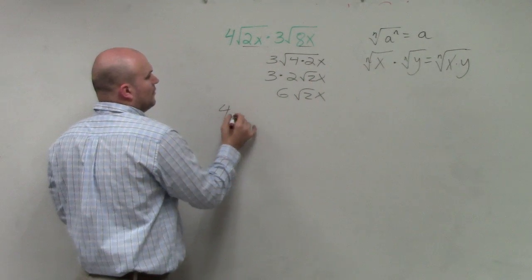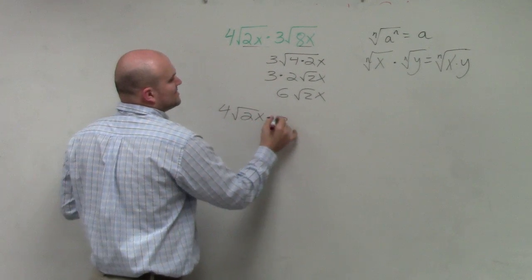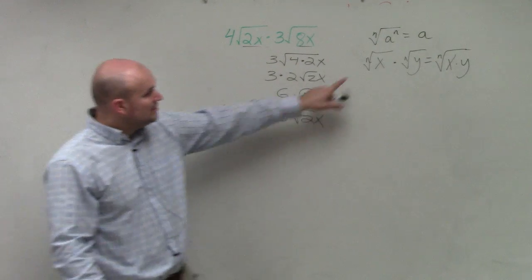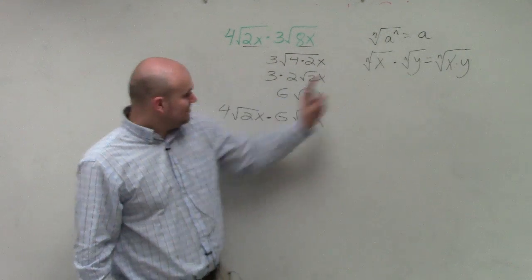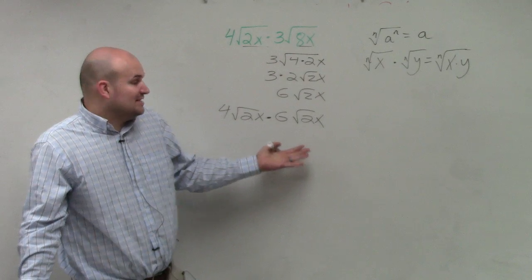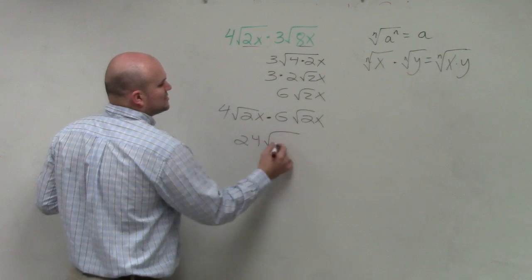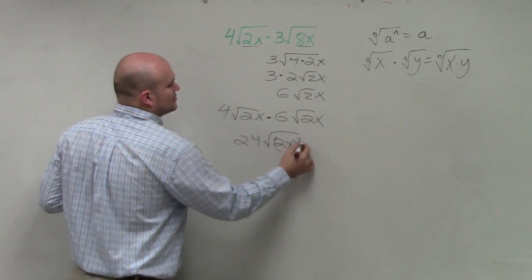So therefore, I have 4 times the square root of 2x times 6 times the square root of 2x. Well, now, my index is the same. My radicands actually have to be the same, but that doesn't really matter. So all you do is multiply the numbers on the outside, 24, times the square root of 2x squared.